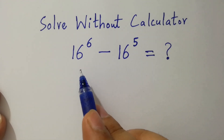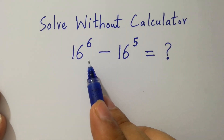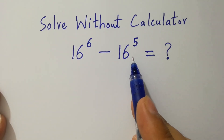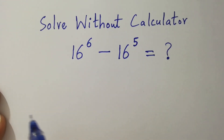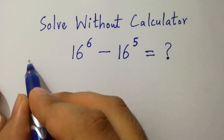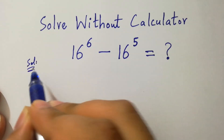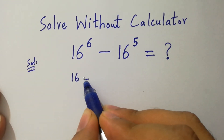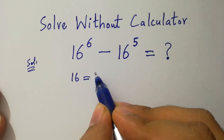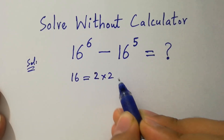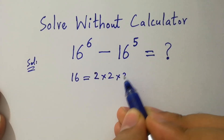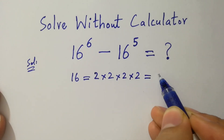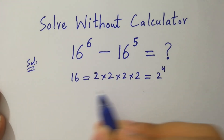Hello friends. 16 to the power 6 minus 16 to the power 5 equals what? Let's find a solution. Since 16 equals 2 times 2 is 4, 4 times 2 is 8, 8 times 2 is 16, so 16 equals 2 to the power 4.